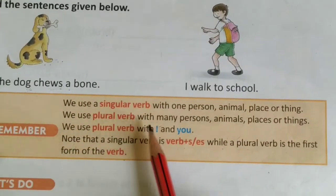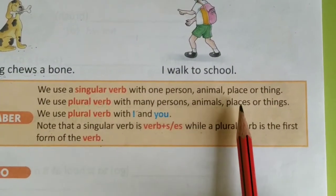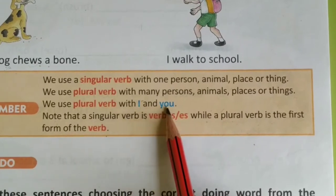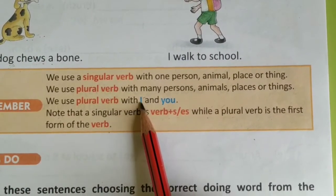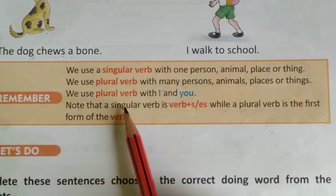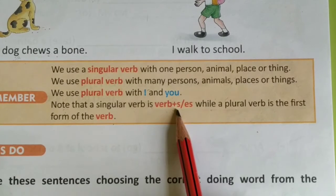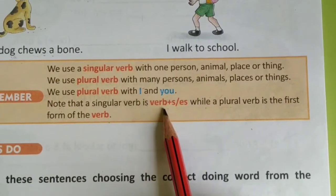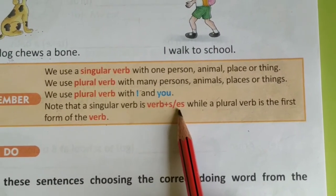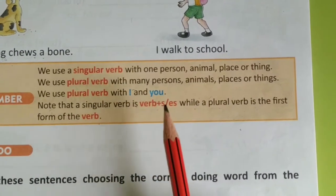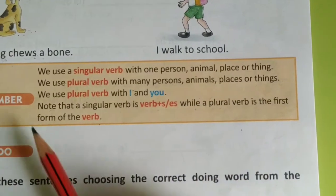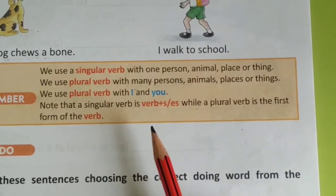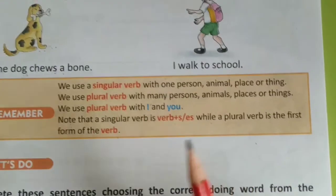We use a plural verb with many persons, animals, places, or things. We also use a plural verb with I and you. Note that a singular verb is the verb plus S or ES — for example, 'play' becomes 'plays', and 'watch' becomes 'watches' — when using a singular noun. A plural verb is the first form of the verb. For example: the boys play, but the boy plays.